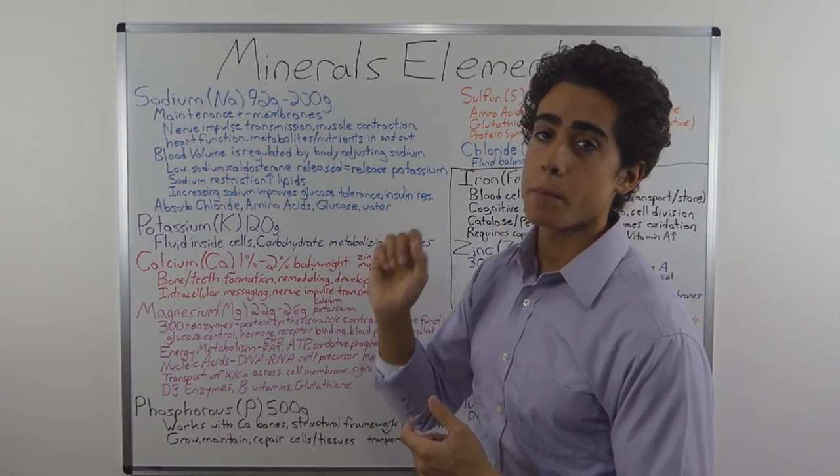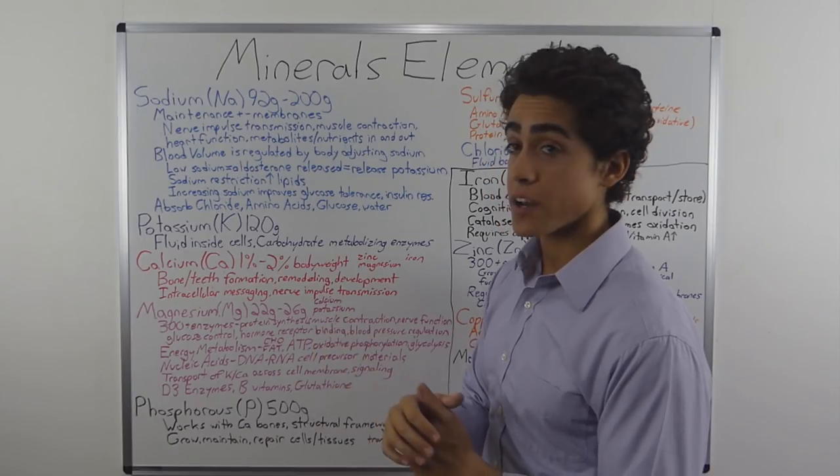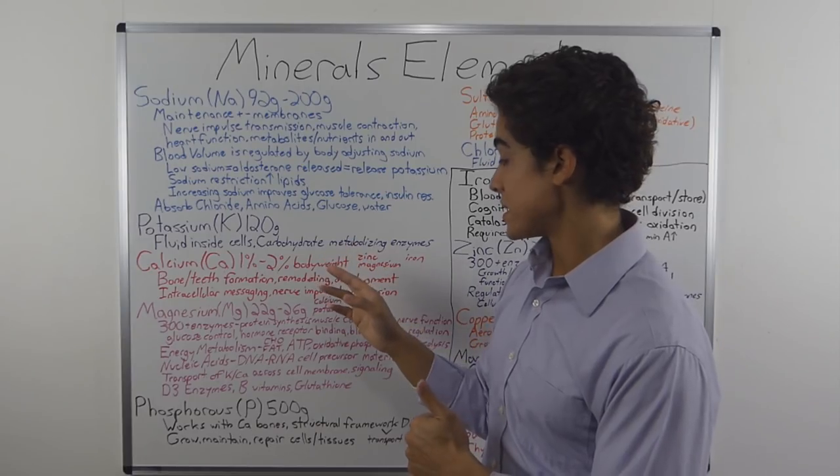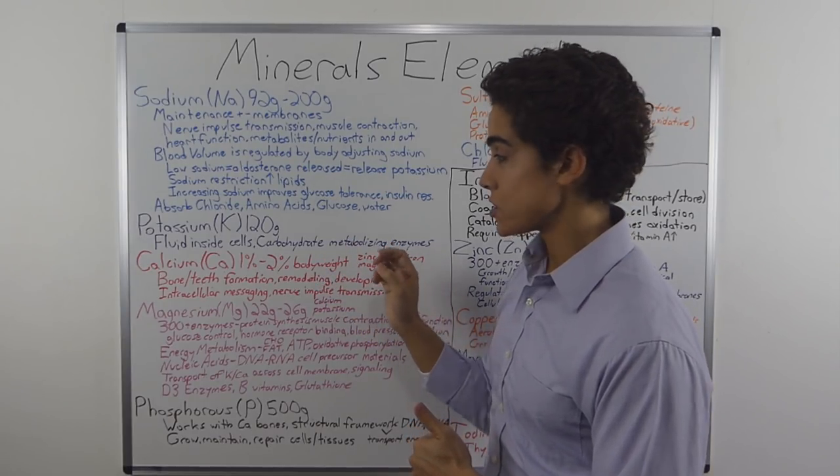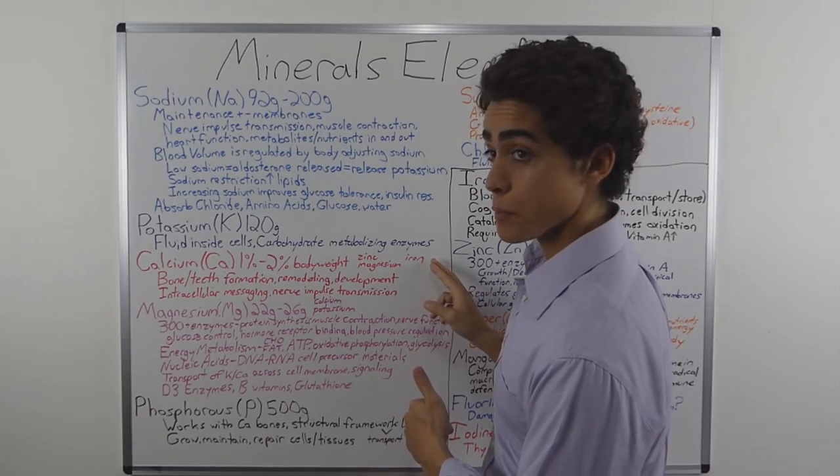Calcium is the most abundant mineral in our body. It comprises 1% to 2% of our body weight. It is very antagonistic with zinc, iron, and magnesium. So when you consume too much calcium, you can deplete these other minerals and elements.